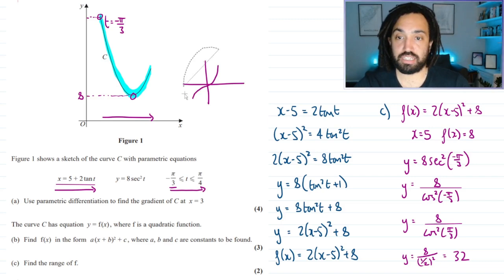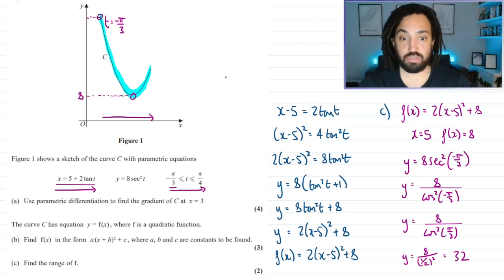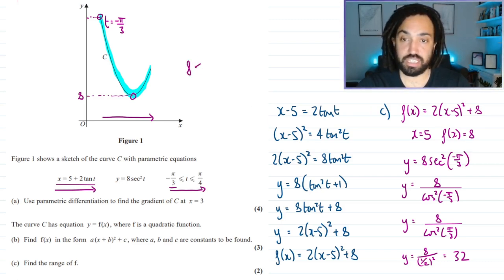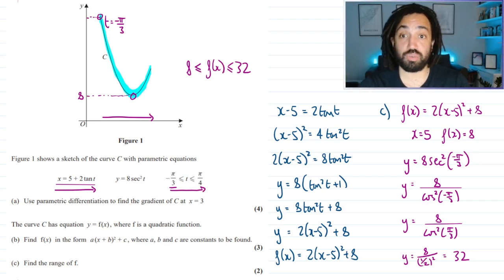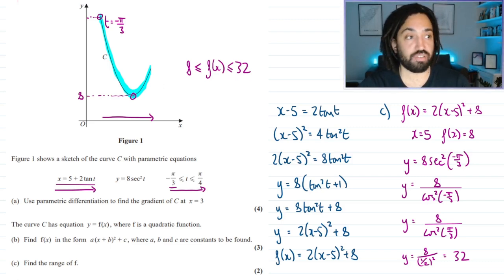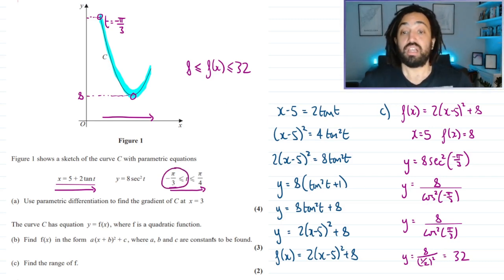So the range is 8 less than or equal to f(x) less than or equal to 32. A quick check: f(x) can equal 8 when x equals 5, and it can equal 32 when t equals minus pi over 3, which is allowed since t can equal minus pi over 3 at the boundary. Enjoyed that — see you later!